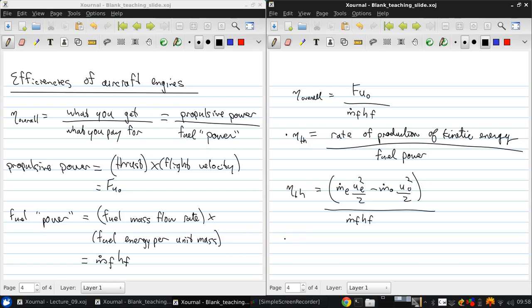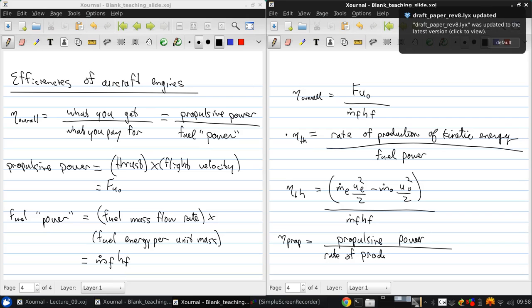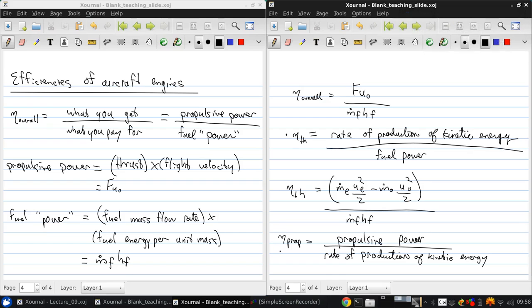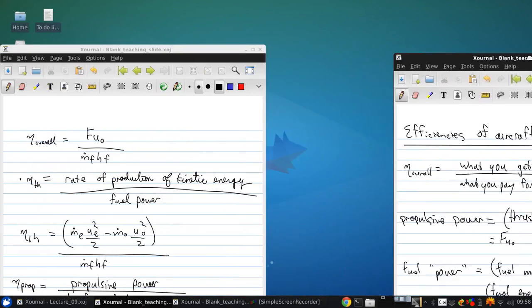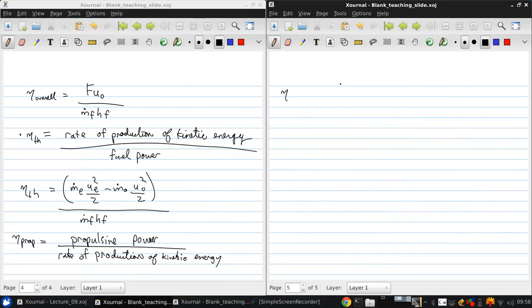Then we also have the propulsive efficiency, which is the propulsive power over the rate of production of kinetic energy. So this, if we write it mathematically, is f times u0 over m dot e ue squared over 2 minus m dot 0 u0 squared over 2.